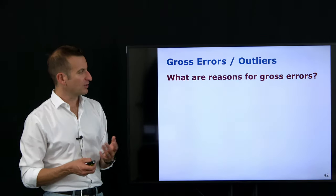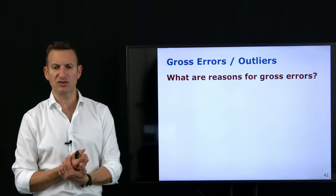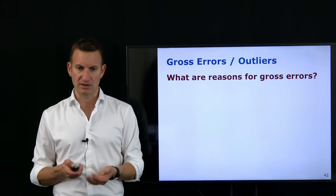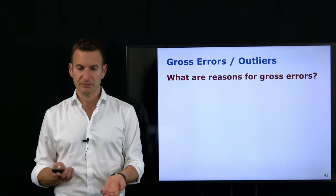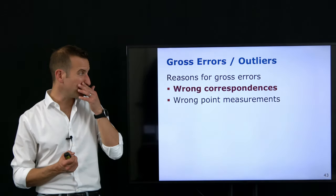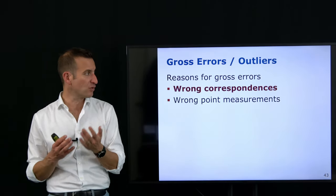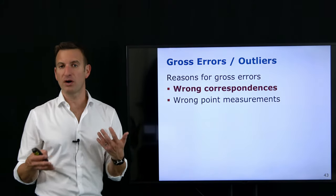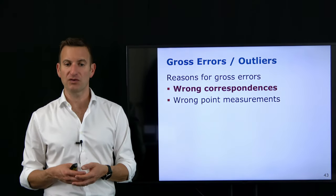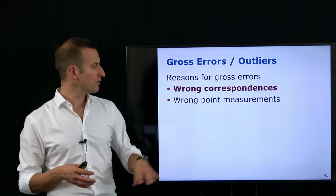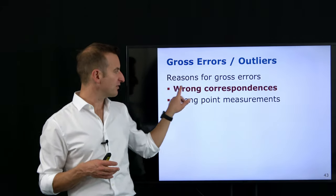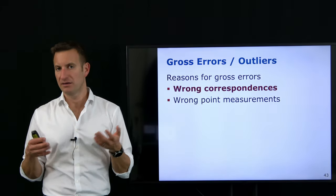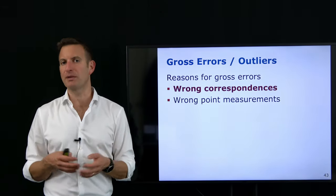Before answering how to deal with outliers, let's first answer: what is the reason for outliers? What can go wrong? Two things can go wrong: we can find the wrong correspondences, or we have wrong point measurements. It turns out that making wrong data associations — the first part — is actually the real problem in reality, not measurement precision.